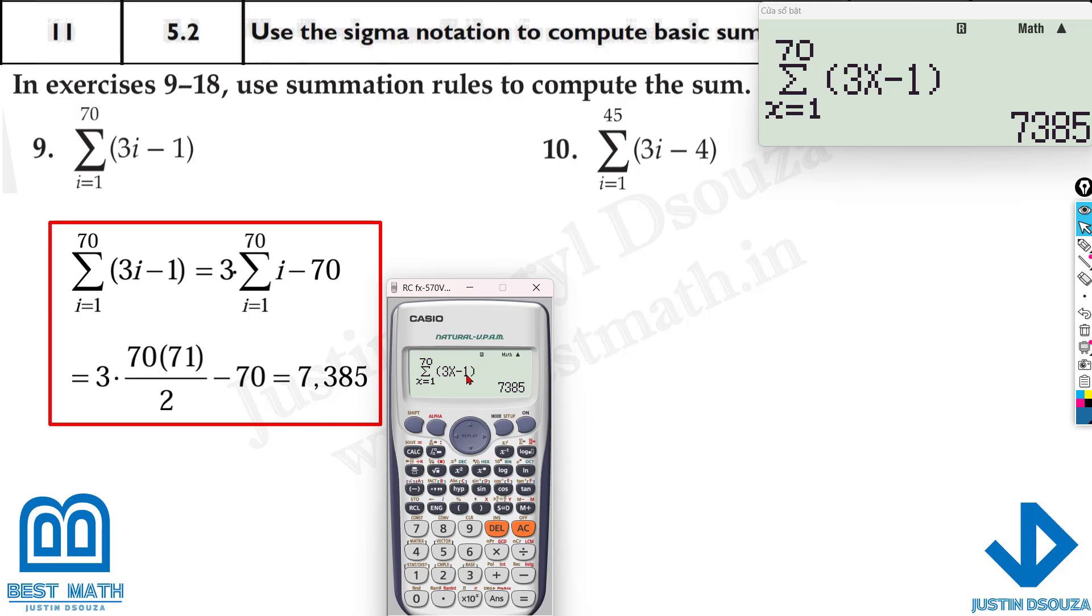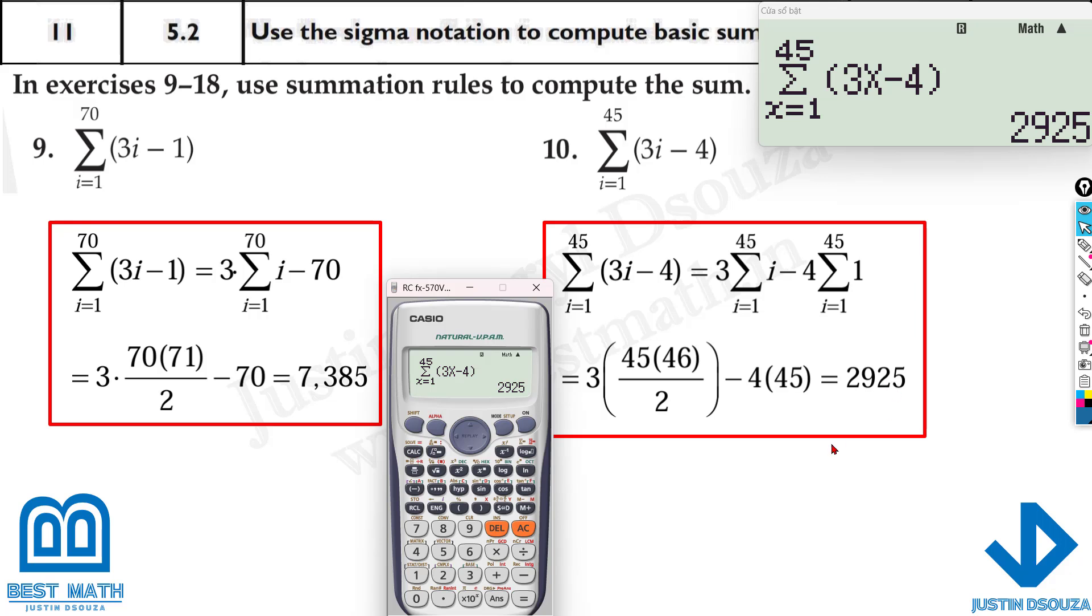Now sometimes it might take up to 30 seconds for some of the complicated problems, but you'll definitely get the answer. Here it is 3x minus 4 and you can see the lower limit is 1 and the upper limit is 45. All you do is press equal to and you will get the answer 2925.